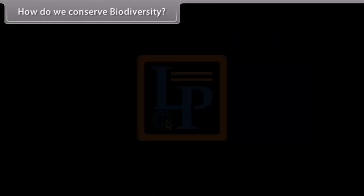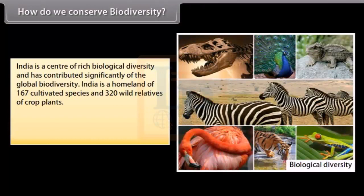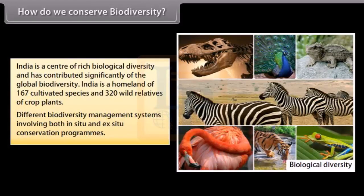How do we conserve biodiversity? India is a center of rich biological diversity and has contributed significantly of the global biodiversity. India is a homeland of 167 cultivated species and 320 wild relatives of crop plants. Different biodiversity management systems involving both in-situ and ex-situ conservation programs.